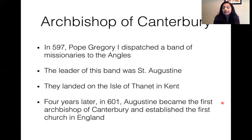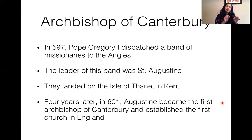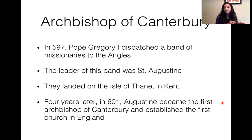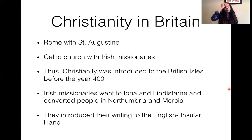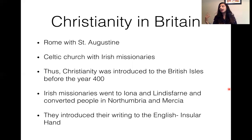St. Augustine came to the British Isles around 600 AD and was the first Archbishop of Canterbury. The first Church of England was established in 600 AD. He arrived with his band of missionaries to an island in Kent. There was already a Celtic Church with Irish missionaries in England, and then the Roman Catholic Church with St. Augustine — so there were different bands of Catholicism being practiced.